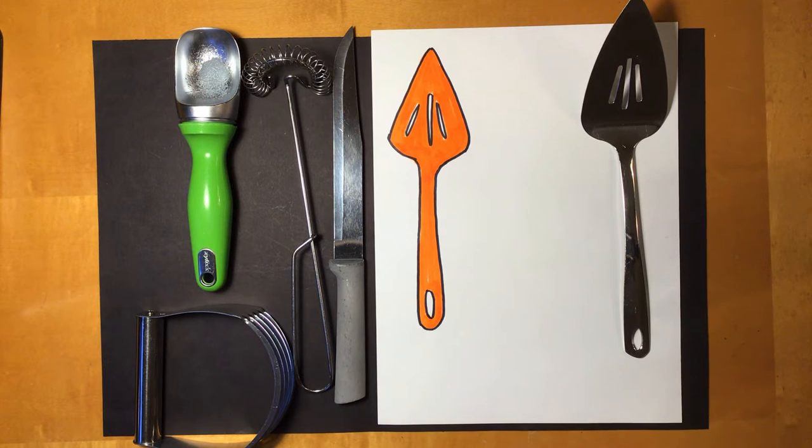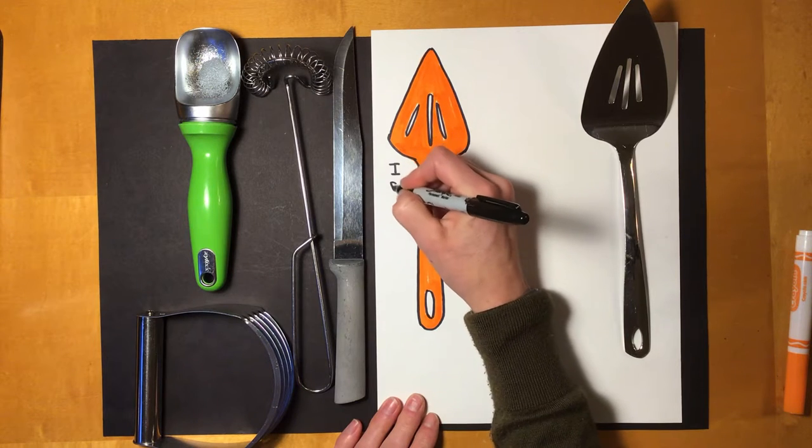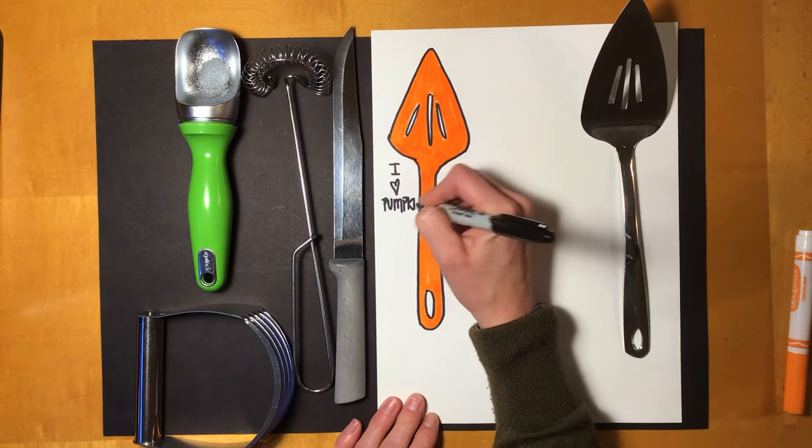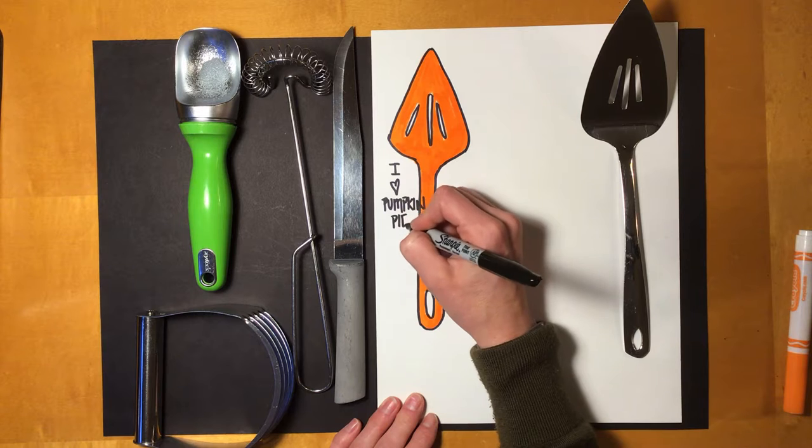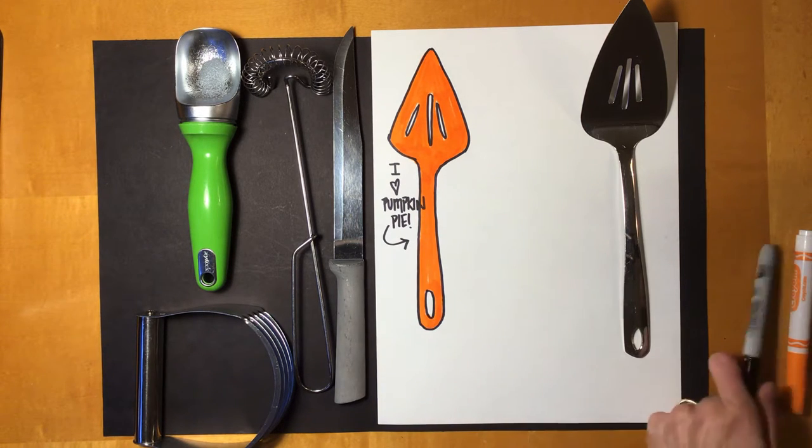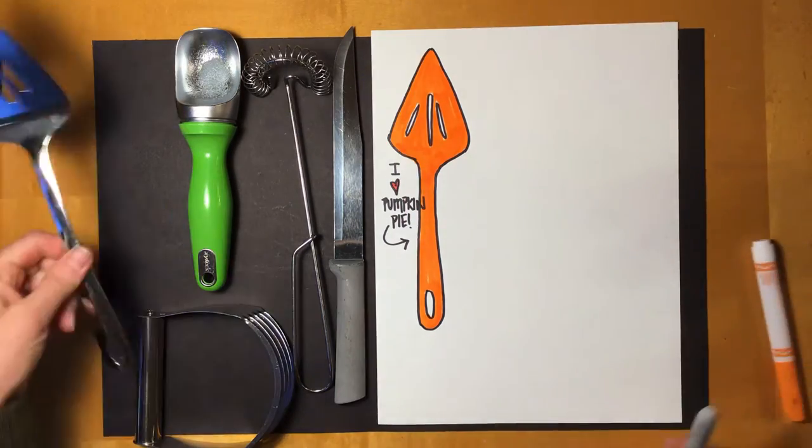So along with this pie server, I want to write a little note. I have to really squish that in and it's going to go over, but that's okay. Add a little red for that heart and there is my pie server.